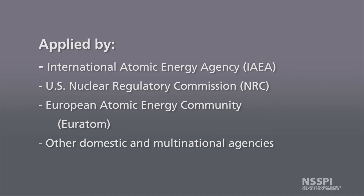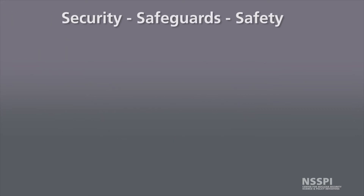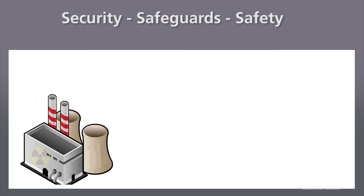We will focus, as mentioned, on IAEA safeguards. Now, beyond the technical definitions, for practical purposes, what's the difference between security, safeguards, and safety — something that should be considered with nuclear facilities. In a nuclear facility, nuclear material is present, and security, safeguards, and safety are all very important and critical to maintaining proper use of nuclear materials.